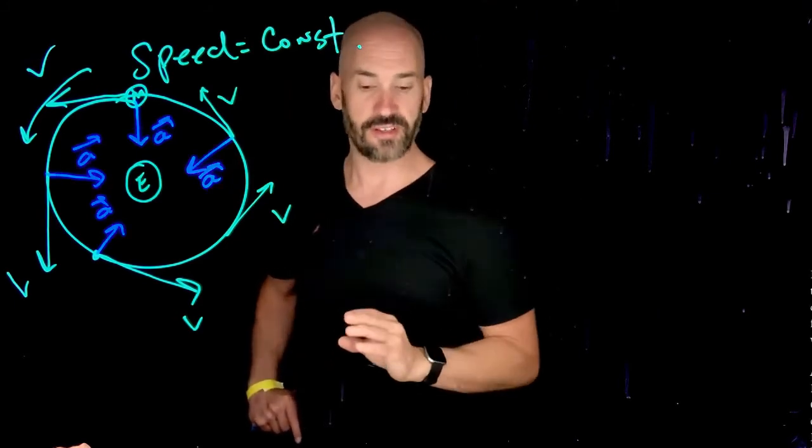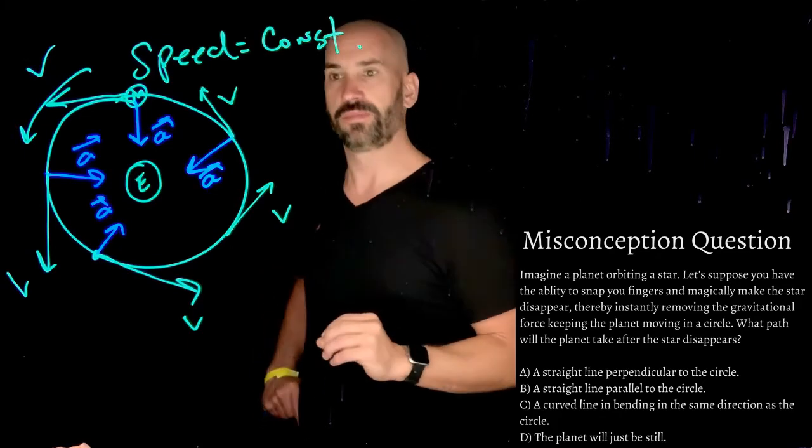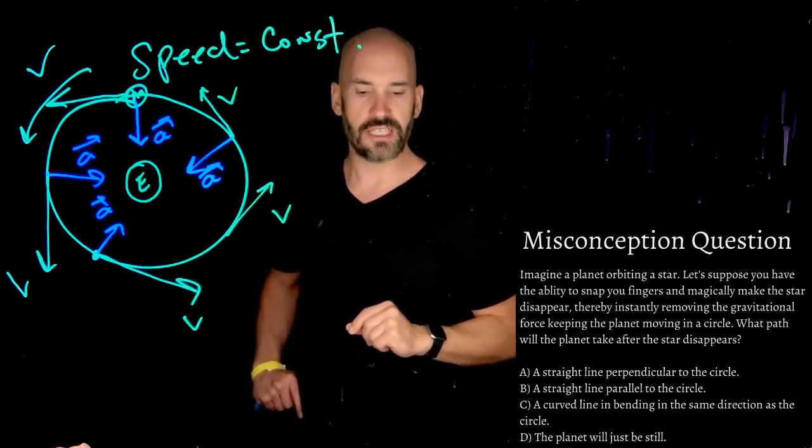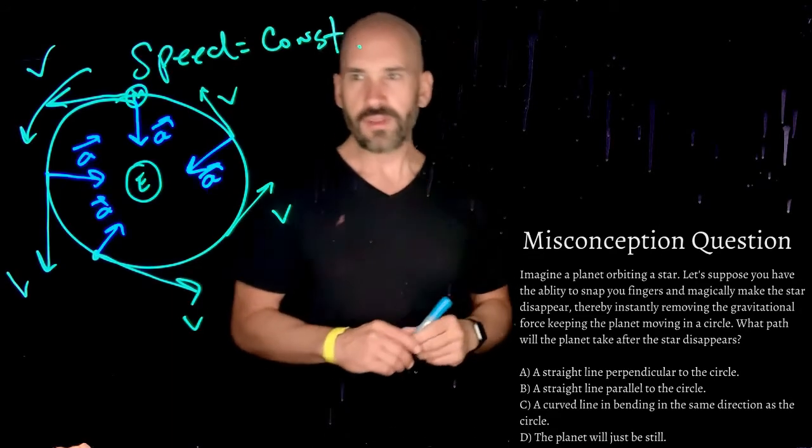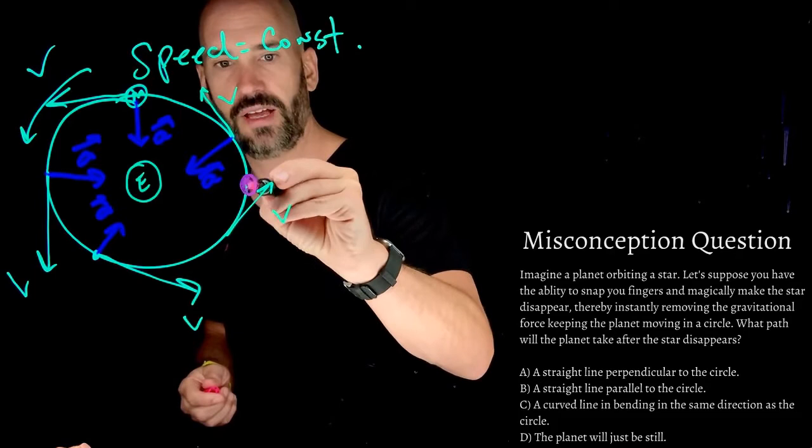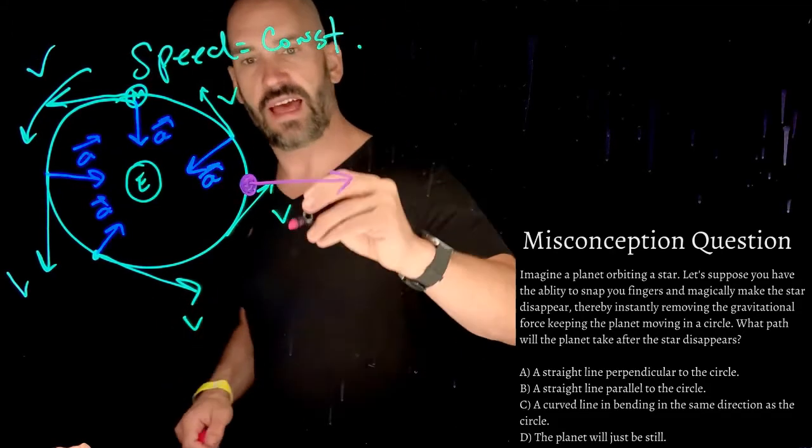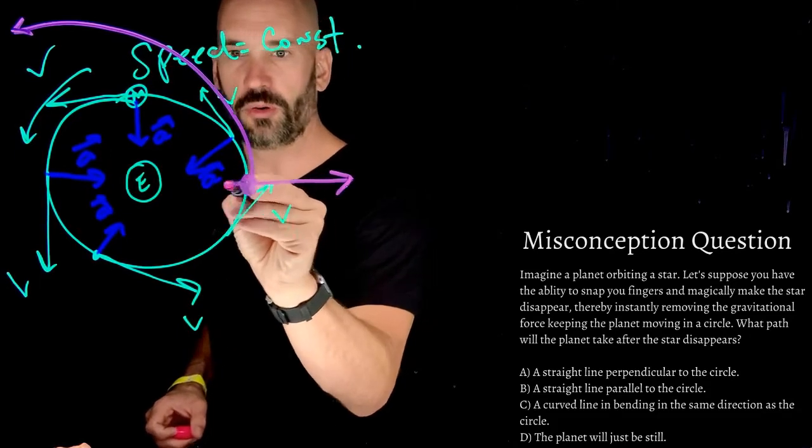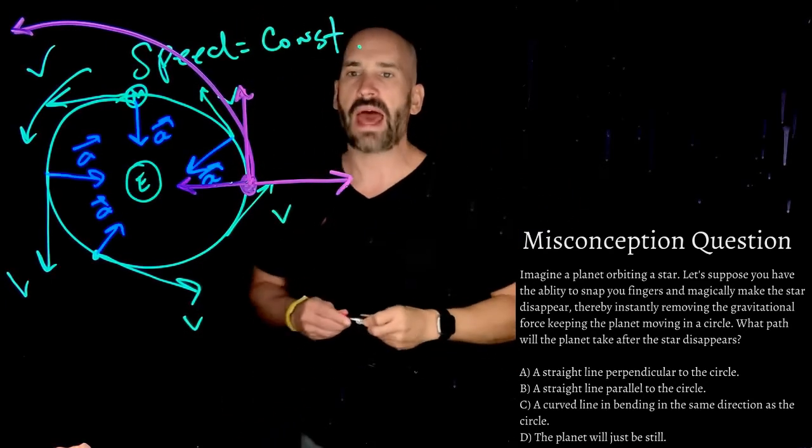Now, this leads us to a misconception question because this is very interesting. So imagine a planet is orbiting a star. Let's suppose that you have the ability to snap your fingers and magically make the earth disappear, thereby instantly removing the gravitational force keeping the planet moving in a circle. What path will the planet take after the star disappears? So there's a couple options, right? You know, someone maybe will guess that if I have my little planet over here and it's orbiting this way, some might guess that it'll shoot out like this, right? Some might guess that it'll go in a curve path like that. Some might guess that because there's gravitational traction, it'll go like that. Some might guess that it would go straight tangent to the circle right there. What path would it follow? Which of those guys?